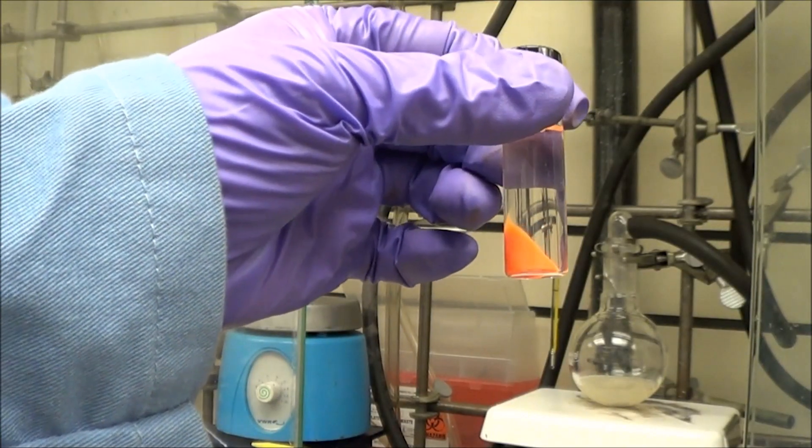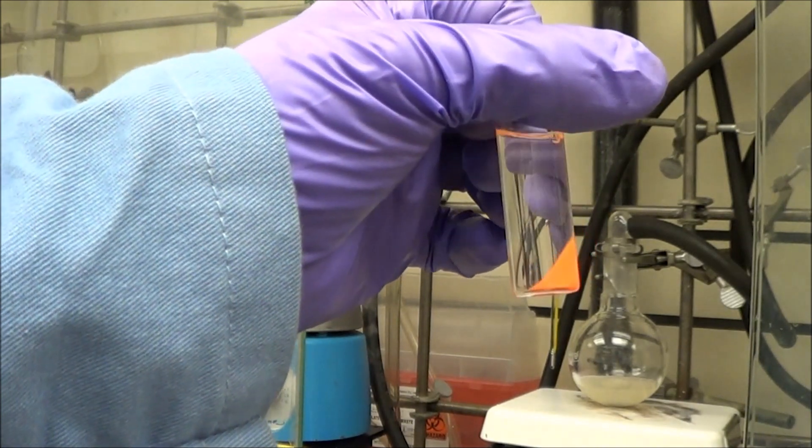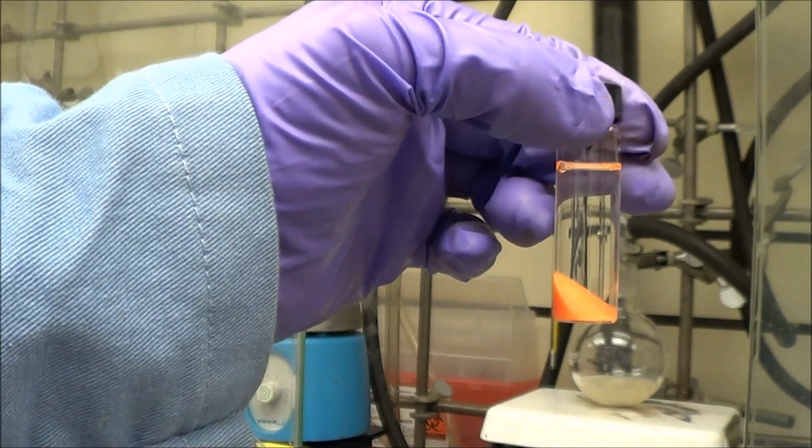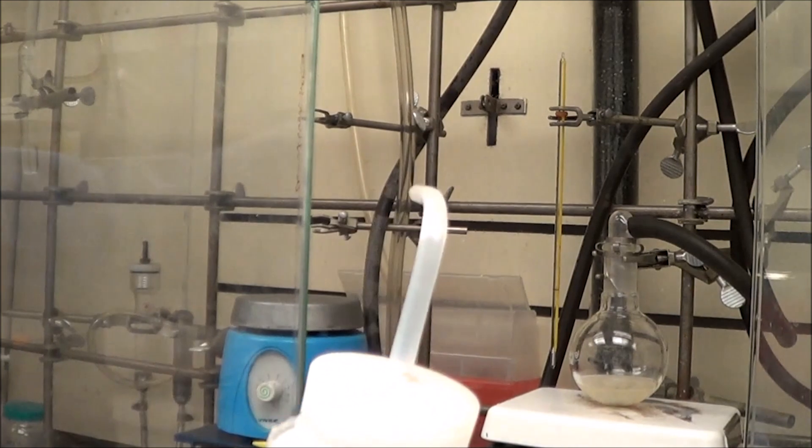For cadmium selenide, the supernatant is clear, but you can see that actually those mostly aren't quantum dots, that's a paste. That's an alkylamine phosphonic acid paste that I've got to extract the quantum dots from, they're embedded in it.